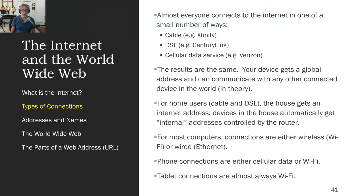Phone connections can be either cellular data or Wi-Fi, and a lot of people are confused by this. When you're on Wi-Fi, it's sending your internet information over the Wi-Fi signal to your router and out onto the internet. When you're using only cellular data — like when you're out in your car — it's going to the cell tower. But the results are exactly the same, and all of this is carefully designed to be very much invisible to you.